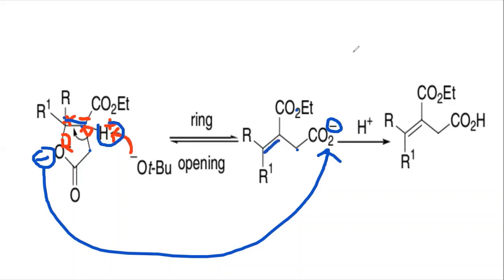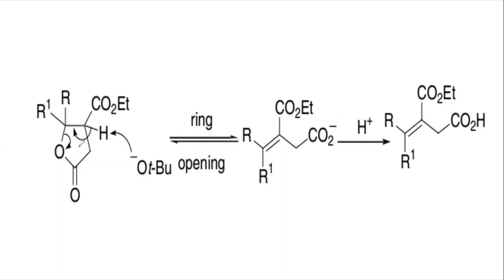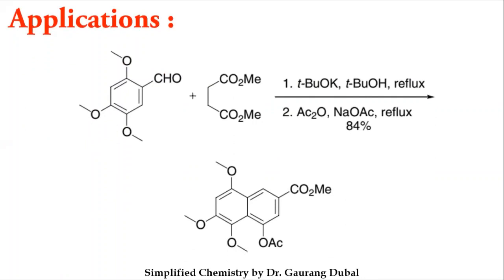This ring-chain compound converts into an open-chain compound through ring opening. By addition of H⁺ you can make a –COOH group. The H⁺ comes from the tert-butanol that was removed earlier — tert-butoxide will be available again. This H⁺ converts the carboxylate into the final acid product, as seen in the main reaction. This completes the mechanism of the Stobbe condensation reaction.